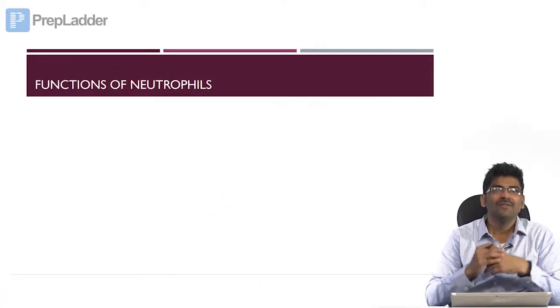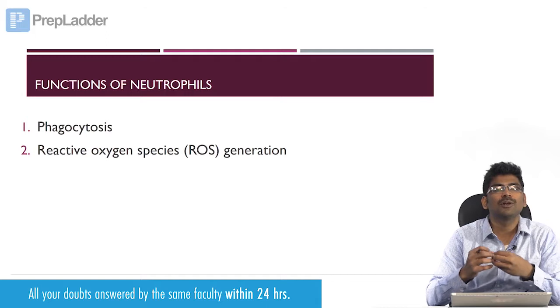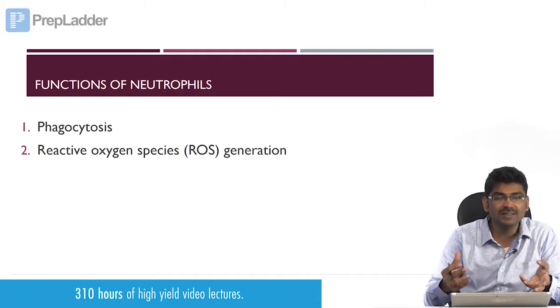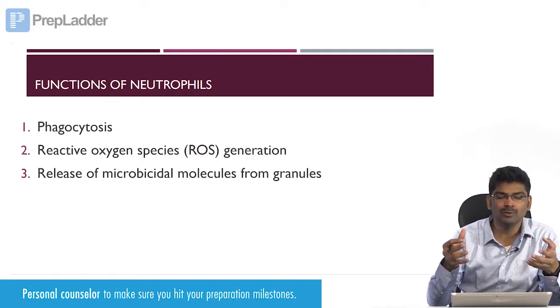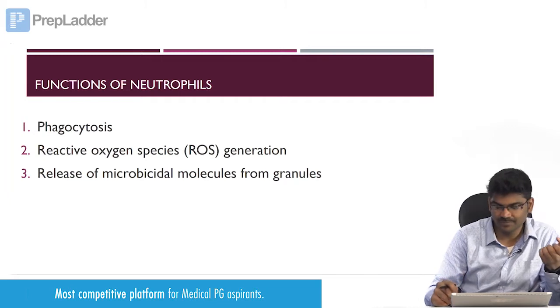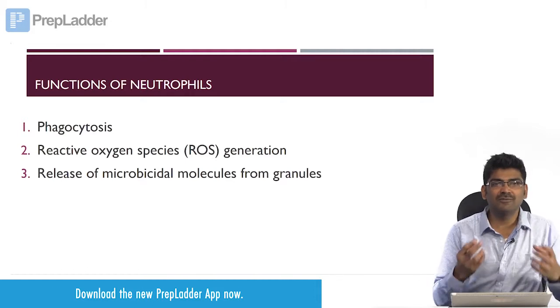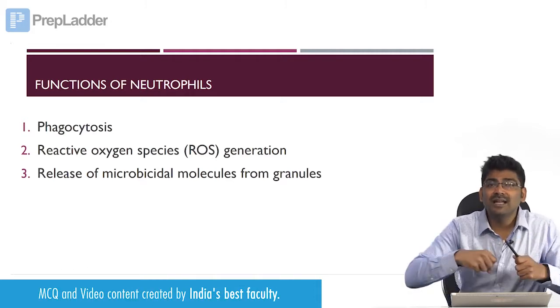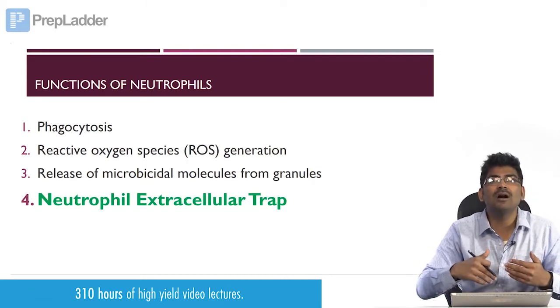Hello friends, let us discuss a high yield topic: neutrophil extracellular trap. We all know the functions of neutrophils like phagocytosis, production of reactive oxygen species which will kill the pathogen, and release of microbicidal molecules from the granules. Recently, they have found that neutrophils trap pathogens by neutrophil extracellular trap.